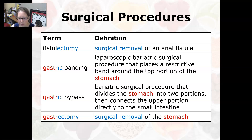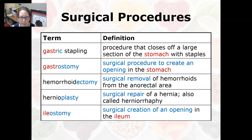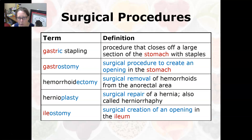A gastrectomy is the surgical removal of the stomach. Gastric stapling is a procedure that closes off a large section of the stomach with staples. A gastrostomy is a surgical procedure to create an opening in the stomach. Hemorrhoidectomy is the surgical removal of hemorrhoids from the anal-rectal area. Hernioplasty is the surgical repair of a hernia, also called herniorrhaphy.